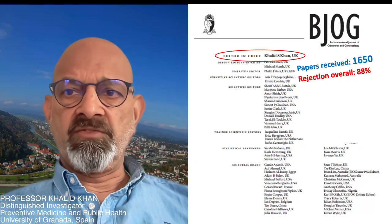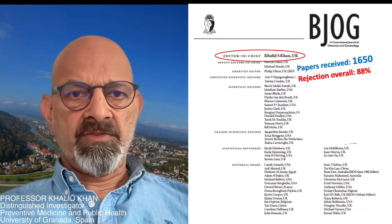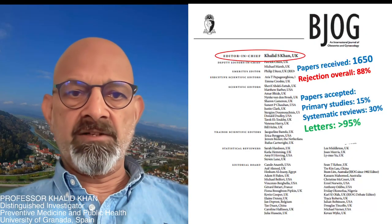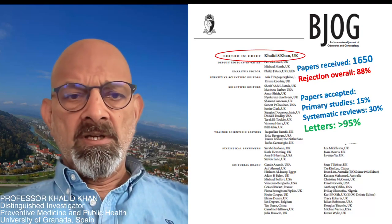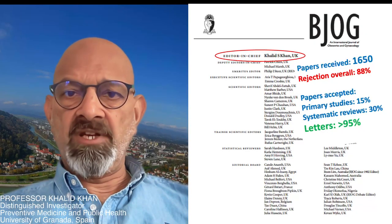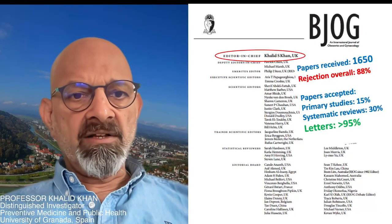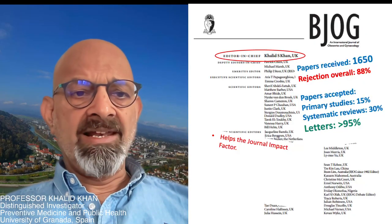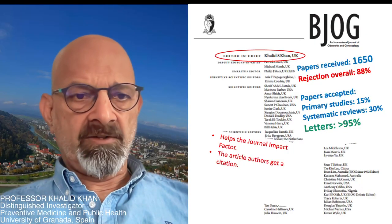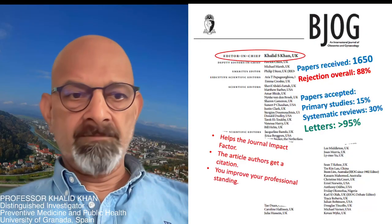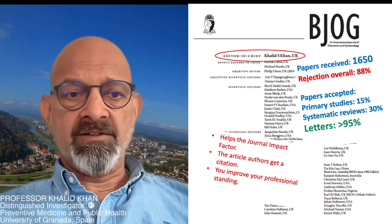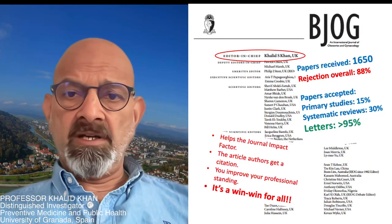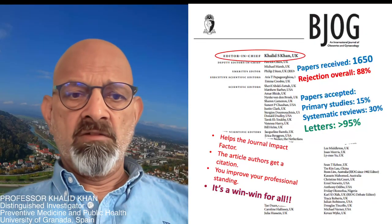When I was chief editor of this journal, we received around 1,600 submissions a year, of which nearly 90% were rejected. Looking by publication type, primary studies and systematic reviews had 15% and 30% acceptance rates respectively. On the other hand, letters had nearly a 100% acceptance rate. This is because publication of a letter helps boost the journal's impact factor, the article author gets an additional citation, and you as a professional writing the letter will help improve your own standing in the profession. So preparing a letter, submitting it to a journal, and getting it published is a win-win for all parties involved.